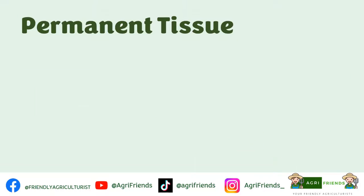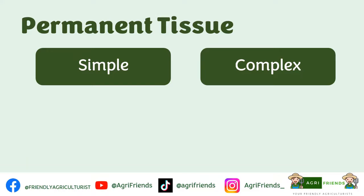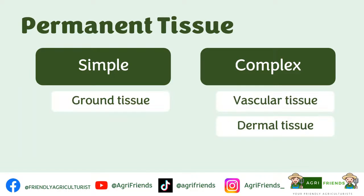Now let's go to permanent tissues. Permanent tissues are derived from meristems that have attained maturity, and therefore they have specific functions. They can be classified into simple and complex. Simple tissues are composed of only one cell type — either parenchyma cells only, or colenchyma cells, or sclerenchyma cells. Complex tissues are made of several types of cells. A cell can differentiate into three types of tissues: ground tissues, dermal tissues, and vascular tissues. Ground tissues are simple tissues, while vascular tissues and dermal tissues are complex tissues.